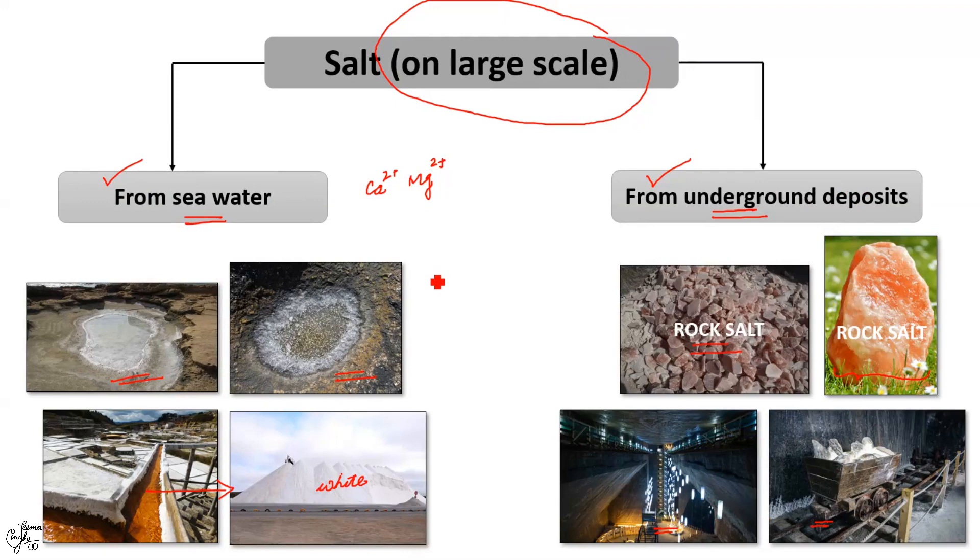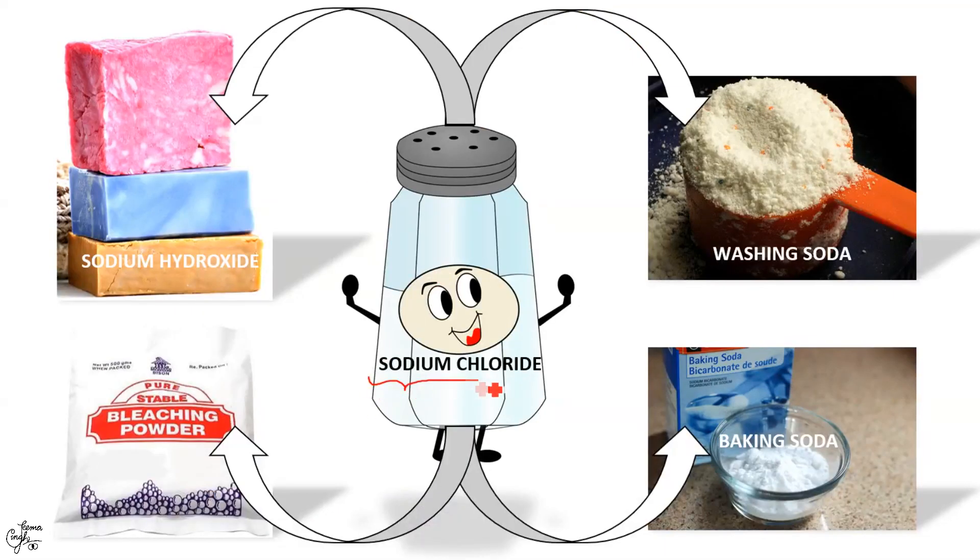Now coming on to some important chemicals that can be obtained from NaCl. NaCl serves as a raw material for the manufacture of chemicals such as sodium hydroxide, bleaching powder, baking soda and washing soda. As mentioned earlier I'll take up these two compounds in my upcoming video.